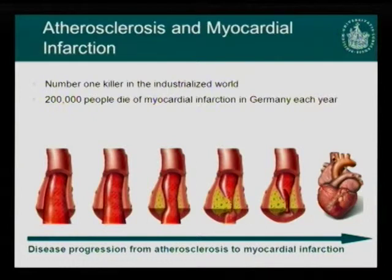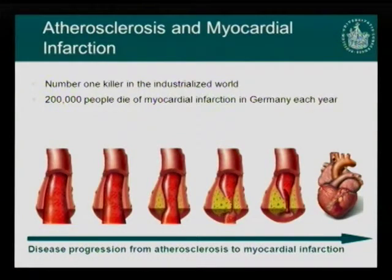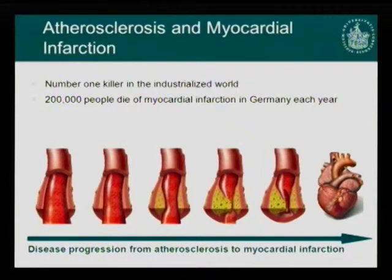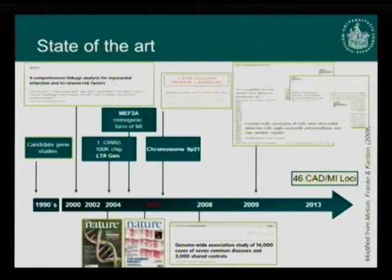Coronary artery disease is the number one killer in the industrialized world, and in Germany around 200,000 people die of myocardial infarction each year. We know that coronary artery disease has many environmental factors influencing it, but we also know there is a strong genetic predisposition. In order to identify the genetic risk factors, several different strategies have been applied over the last 20 years.